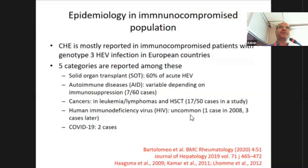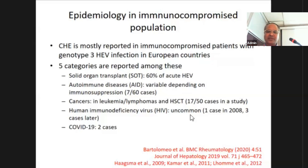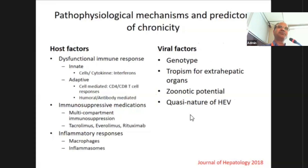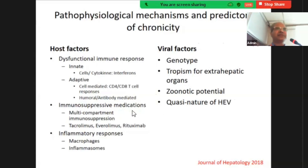In 2022, two cases of chronic hepatitis E were documented in COVID-19 patients due to use of immunosuppressive medications such as tocilizumab. The underlying mechanism is that hepatitis E virus is cleared by the immune system, so any dysfunction — in innate or humoral immunity — due to immunosuppressive medications, HIV, or primary immunodeficiency may lead to development of chronic hepatitis E.